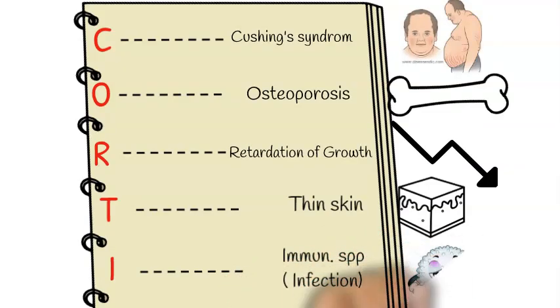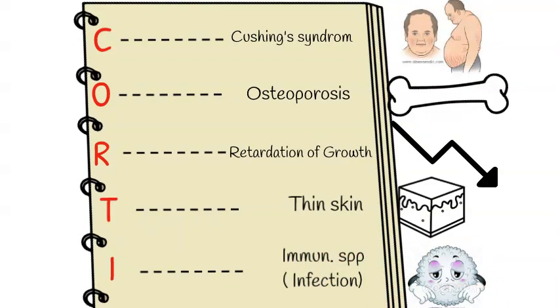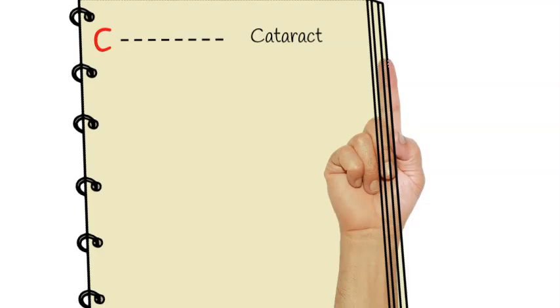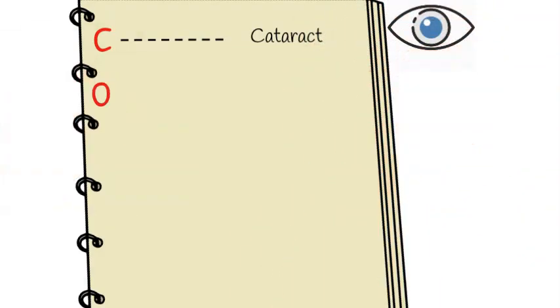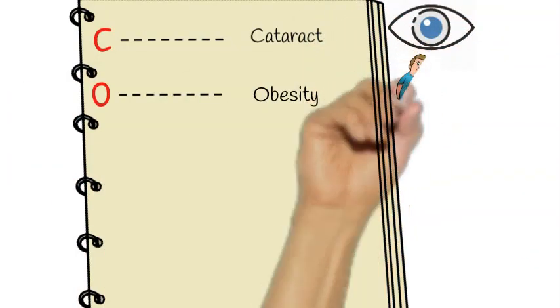I is for immune suppression, which increases infections. The second C stands for cataract. O is for obesity.